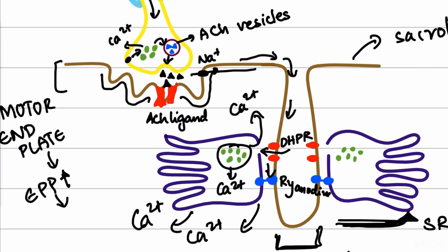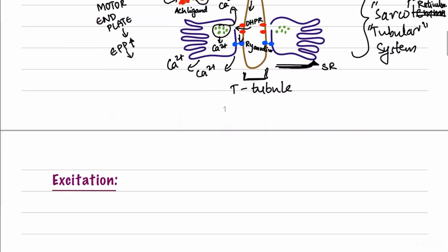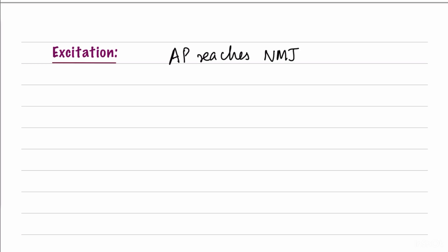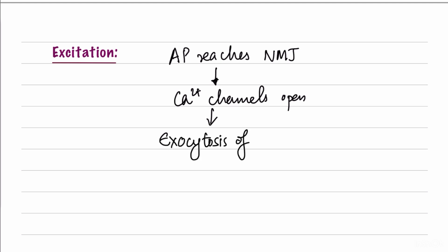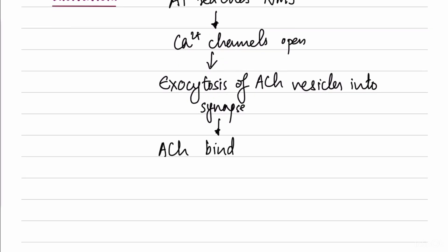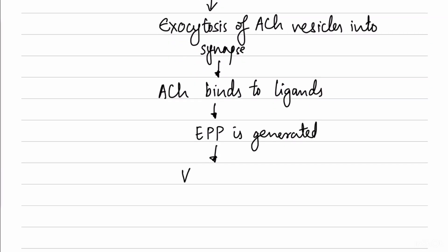To summarize the excitation events: it begins at the neuromuscular junction where an action potential reaches the nerve ending, causing calcium channels to open. This leads to exocytosis and release of ACh into the synaptic cleft. ACh binds to its ligands, generating an end plate potential, which leads to the opening of sodium channels.